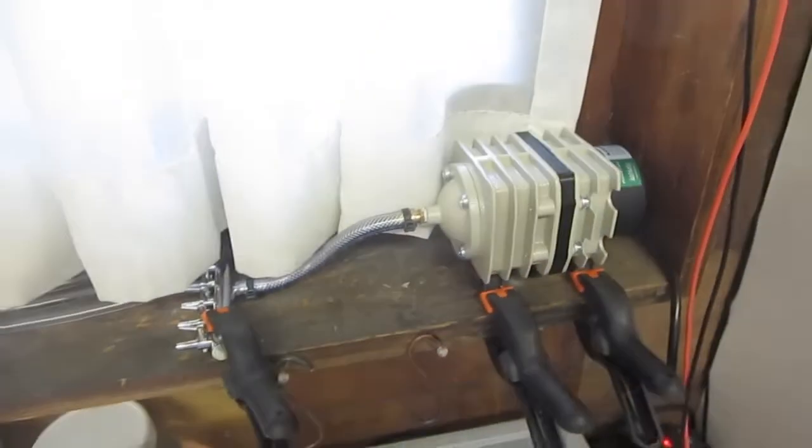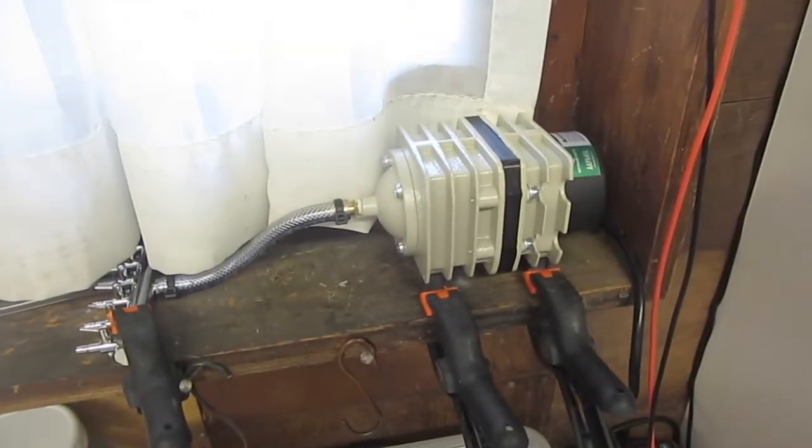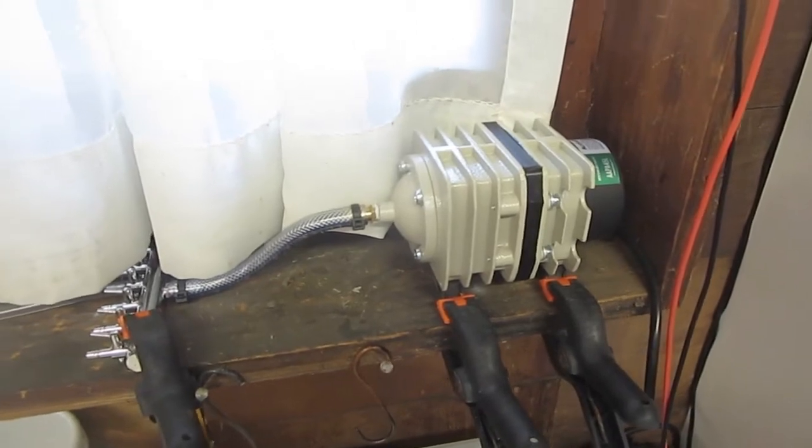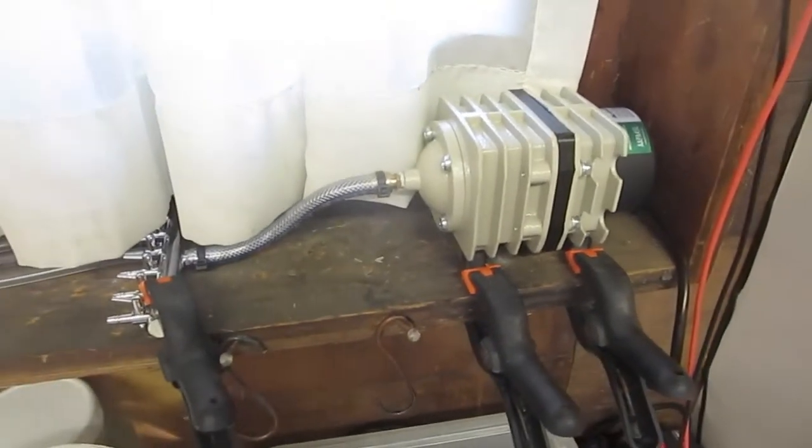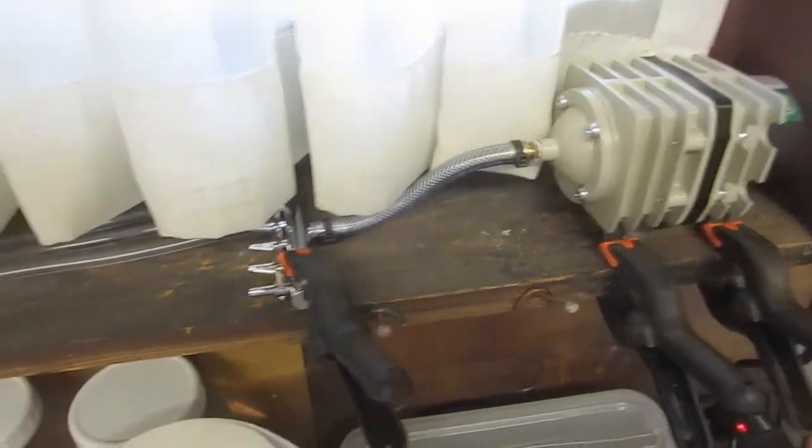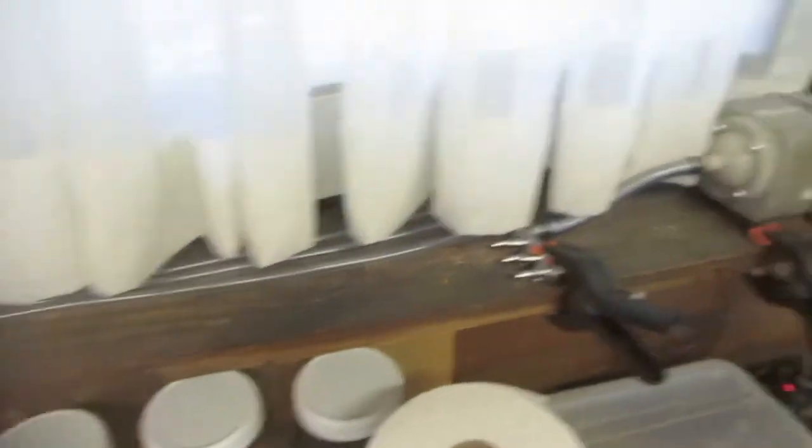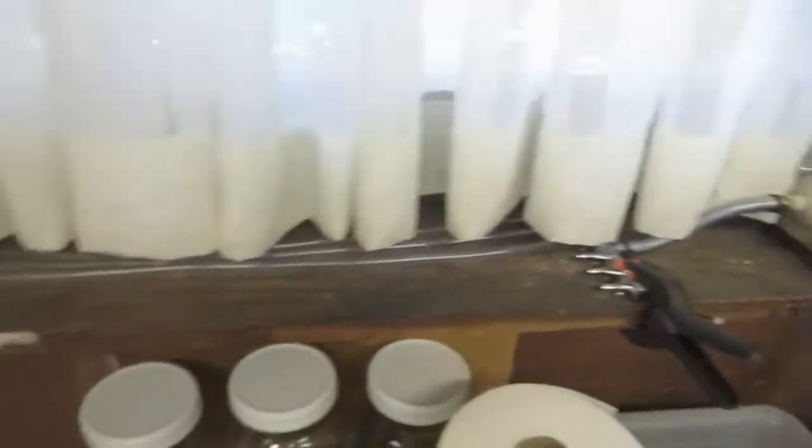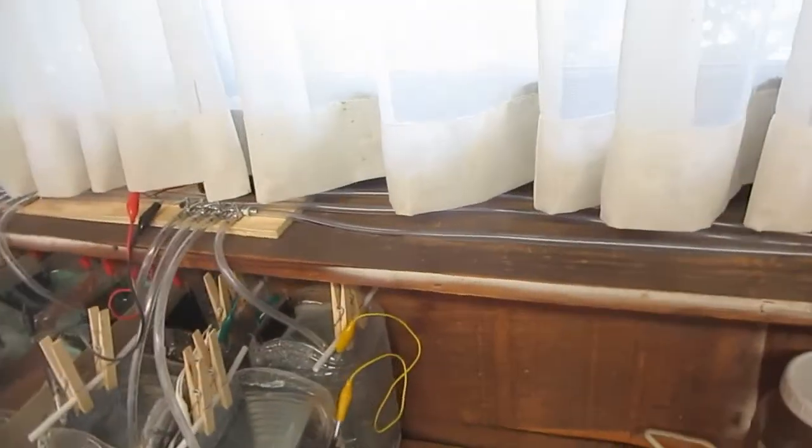This is a 45 liter per minute, 20 watt air pump. The power consumption is just the same as if you were running a 20 watt light bulb 24-7. It's about half the capacity. Right now it's running about half the capacity.